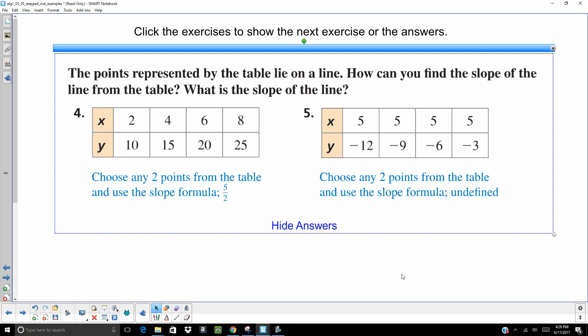You should get a slope of 5 over 2. And we want to leave it as 5 over 2. You don't want to get an improper fraction. It's awkward if you give a slope as 2 and 1 half. 5 over 2 is a better way of doing it. On number 5 here, your x's are constant so there's no change. You end up with 0 in the denominator. It's undefined.